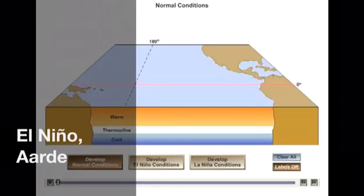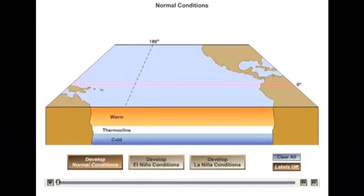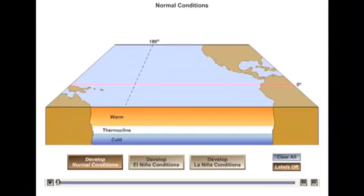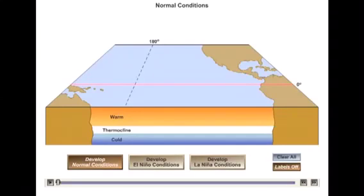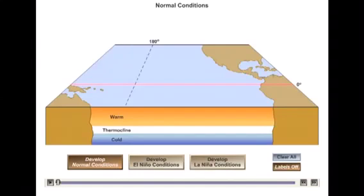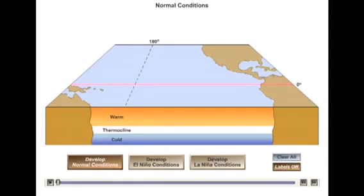In this animation, we're going to look at the cycle of El Niño and La Niña — a pattern that occurs regularly in the Pacific Ocean and has a huge effect on climate and rainfall and other kinds of activity all around much of the world, especially around the Pacific Ocean.